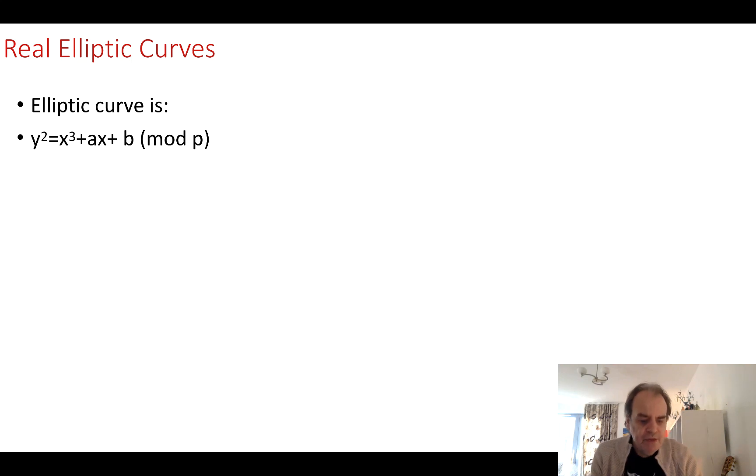There's our real elliptic curve. We take x cubed plus ax plus b mod p equals y squared.